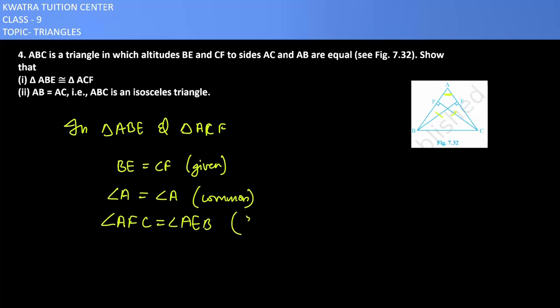So here you can write it as 90 degrees. So which congruence is this? ASA congruence. Two angles and one side.